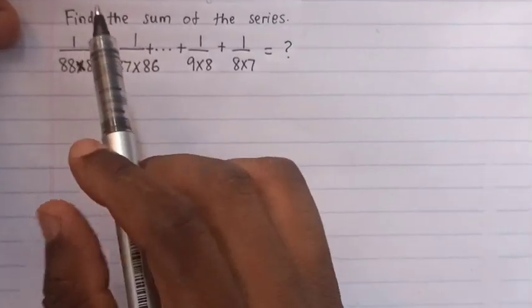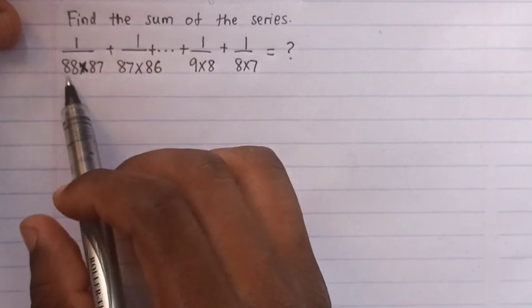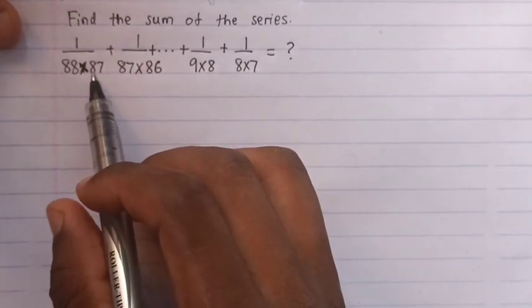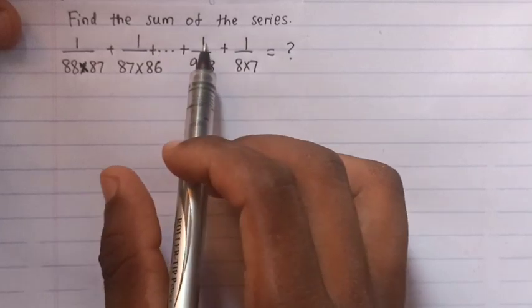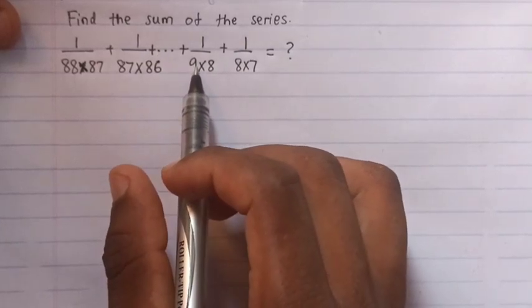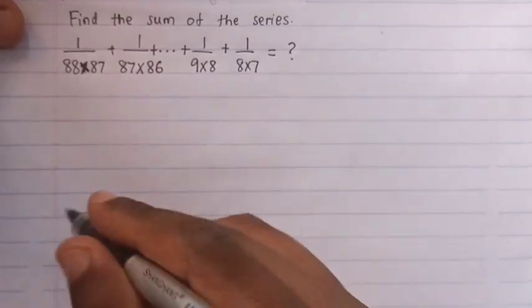Hello, you are asked to find the sum of the series. The series is 1 over 88 times 87, 1 over 87 times 86, plus up to 1 over 9 times 8, plus 1 over 8 times 7.